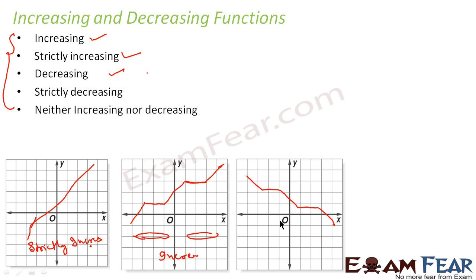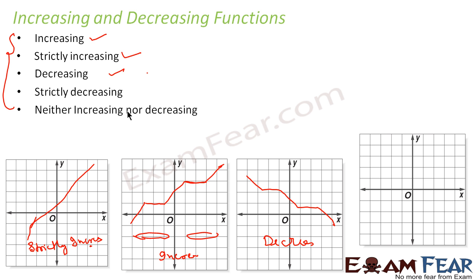Similarly, a decreasing function is one which sometimes decreases and sometimes is constant. That kind of function is called a decreasing function. Then we have strictly decreasing — that means the function which always decreases. There is no constant interval. Always decreasing — that's called strictly decreasing.